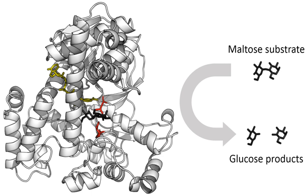Enzyme reaction rates can be decreased by various types of enzyme inhibitors. A competitive inhibitor and substrate cannot bind to the enzyme at the same time. Often competitive inhibitors strongly resemble the real substrate of the enzyme. For example, the drug methotrexate is a competitive inhibitor of the enzyme dihydrofolate reductase, which catalyzes the reduction of dihydrofolate to tetrahydrofolate. This type of inhibition can be overcome with high substrate concentration. In some cases, the inhibitor can bind to a site other than the binding site of the usual substrate and exert an allosteric effect to change the shape of the usual binding site.